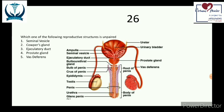The epididymis finally ends in the vas deferens, which is a duct — essentially a piping system — that transports sperm from the epididymis to the urethra. The urethra starts from the urinary bladder and passes through the prostate gland into the penis. Its function is transporting both urine and semen.